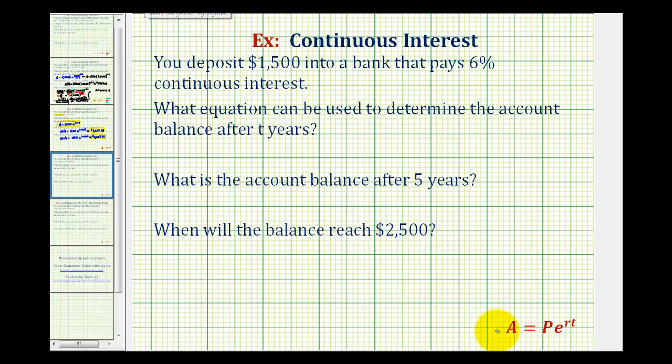So we'll be using the continuous interest formula given here below. It's actually the same formula that we used for exponential growth and decay, it's just some of the variables have changed. P represents the principal or starting amount. R is the annual interest rate expressed as a decimal. T is the time in years. And A is the amount after t years.